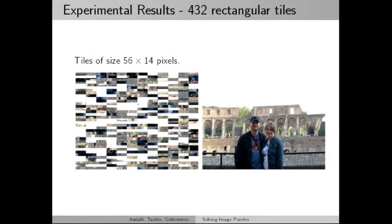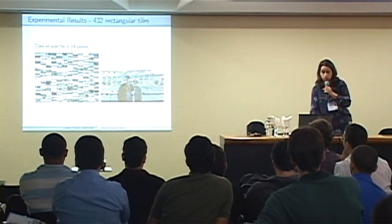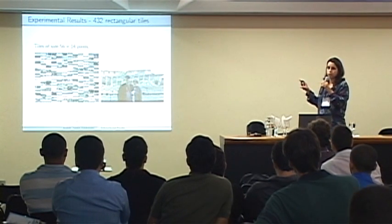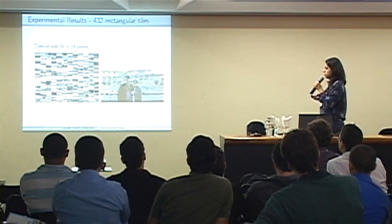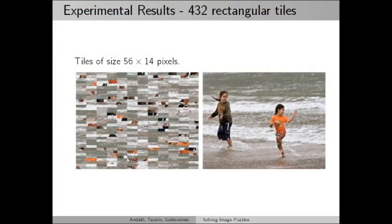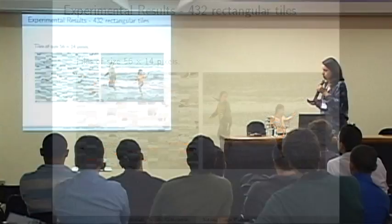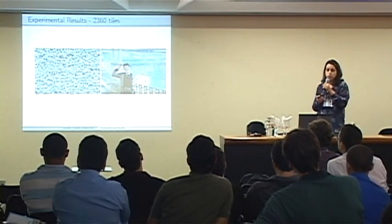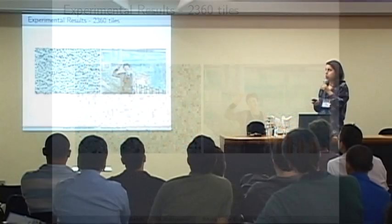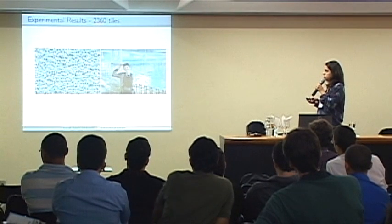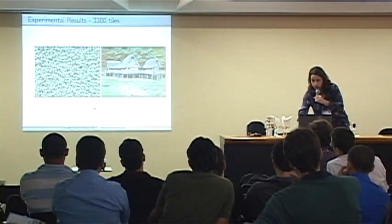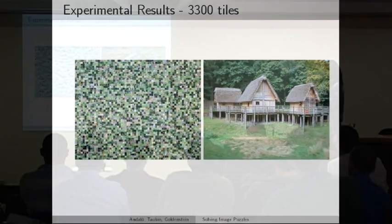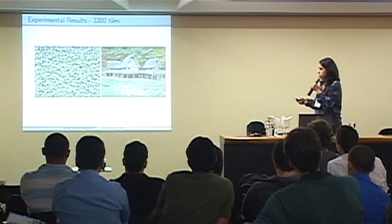We can also solve problems with non-square, rectangular tiles, which Pomeranz cannot handle. Here is an example with tiles of 56 by 14 pixels — our result is perfect. Another example shows the initial scrambled configuration and our correct result. We also tested with larger puzzles: a puzzle with 2,360 tiles produces a perfect permutation, and a puzzle with 3,300 tiles also achieves 100% accuracy on both metrics.